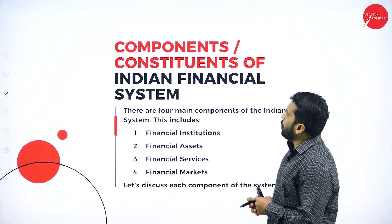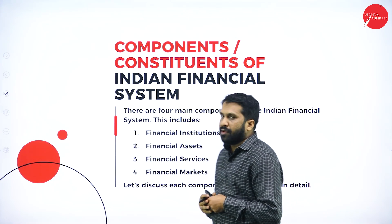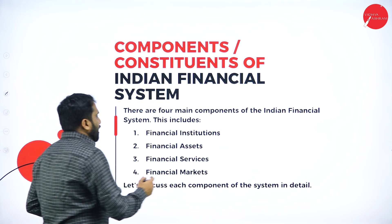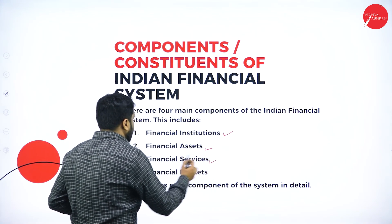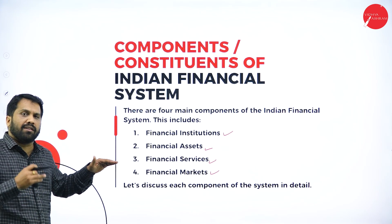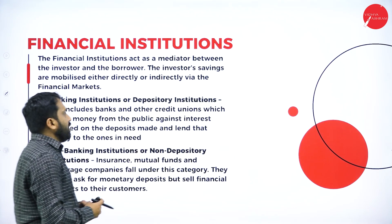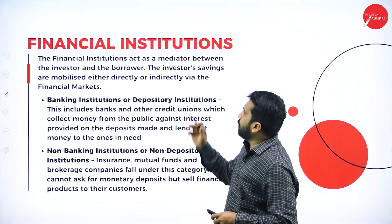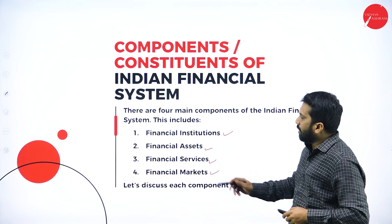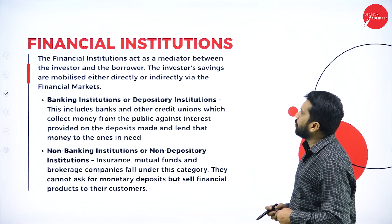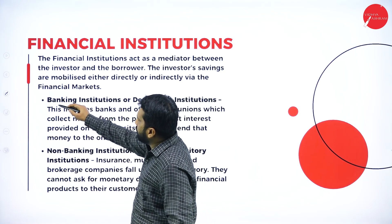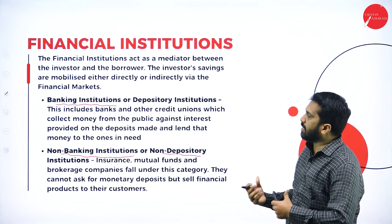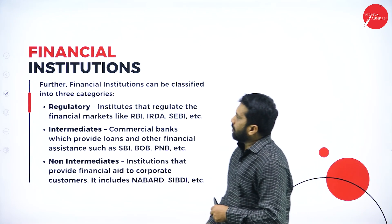Now, the components and constituents of the Indian financial system. Your whole syllabus is based on these four components only: financial institution, financial asset, financial services, and financial market. We will learn each in detail in upcoming topics. Financial institutions are classified as banking institutions and non-banking institutions, also called non-depository institutions.